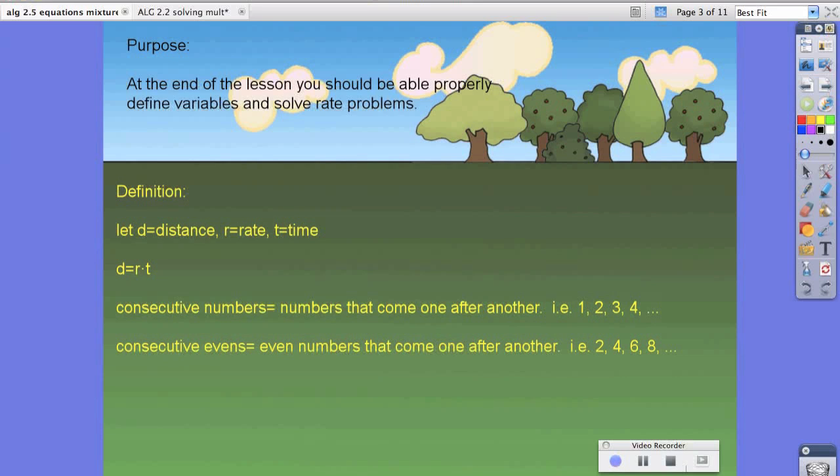The next thing we need to look at is consecutive numbers, which are numbers that come one after another. For example, 1, 2, 3, and 4 all come after one another.